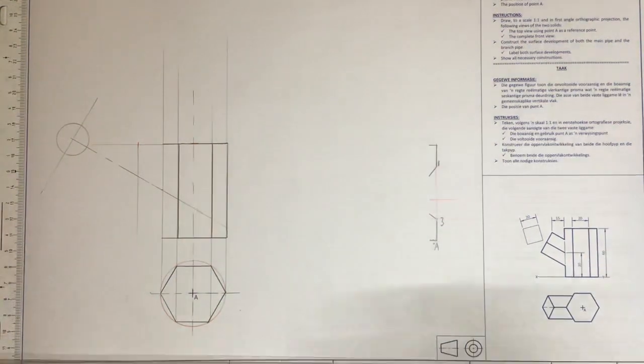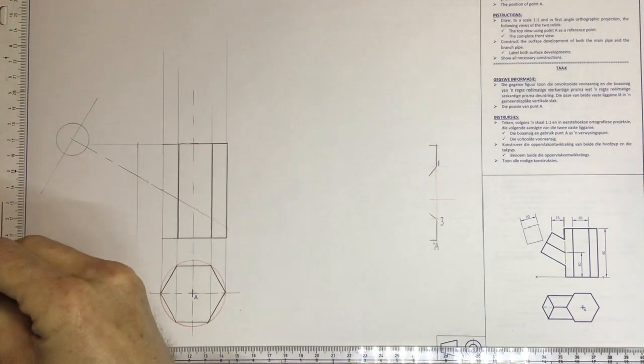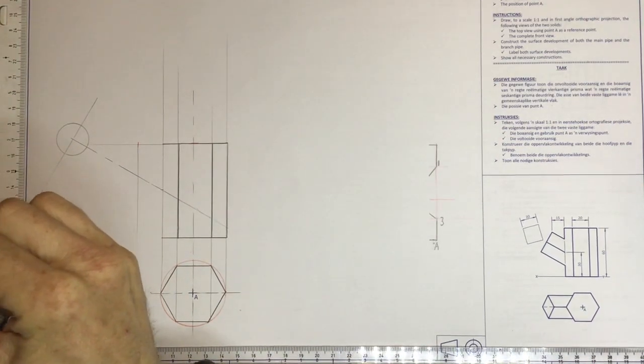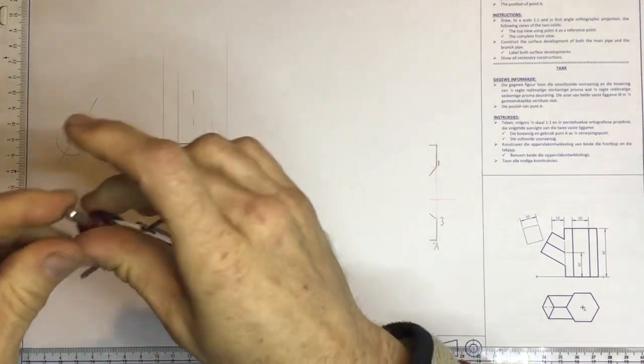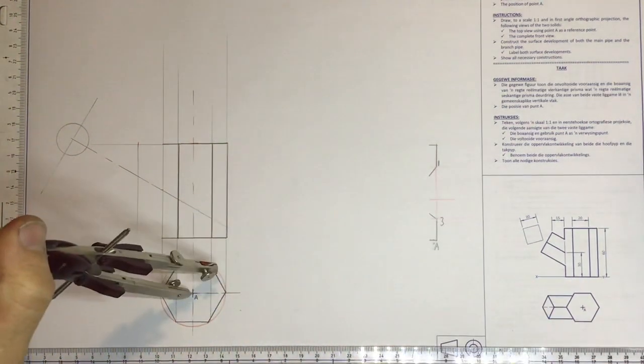I'll just show that to you. There we go, set it to 20. And I can draw a circumscribed circle going around like that.